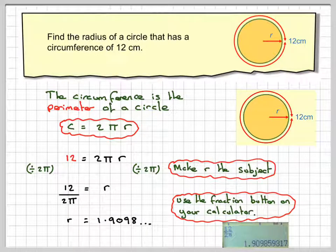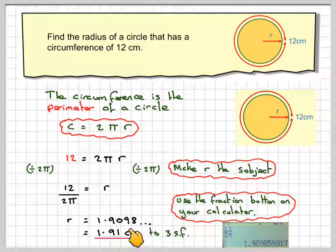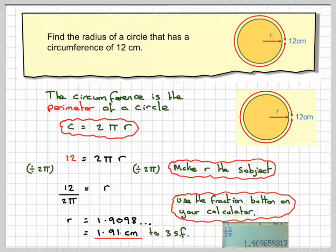Normally we write our answer to 3 significant figures. The 9 makes it round to 1, so we get 1.91 centimetres to 3 significant figures.